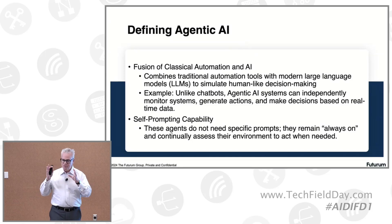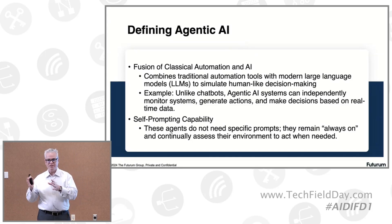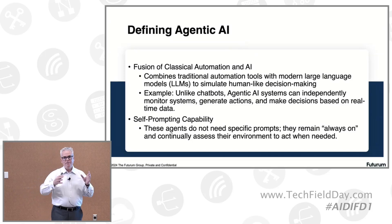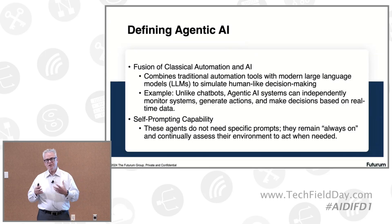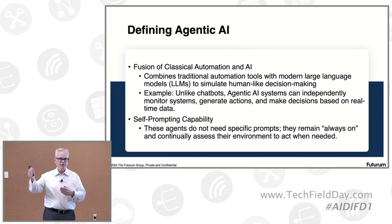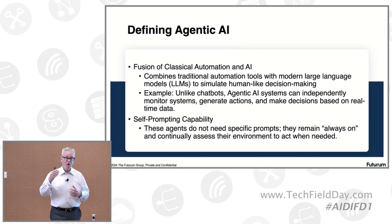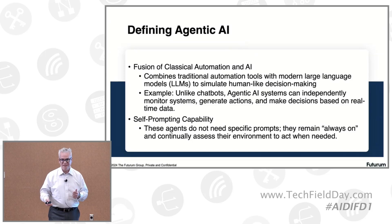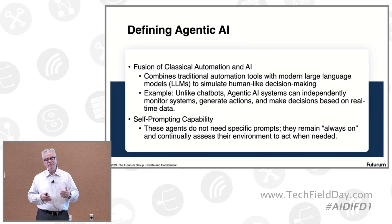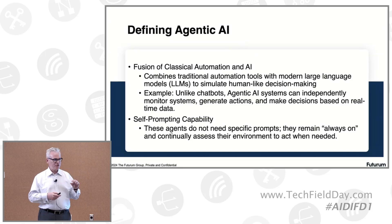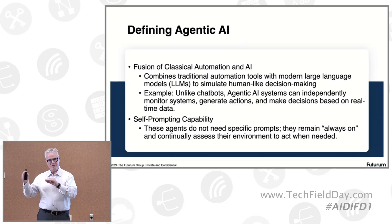You've got essentially classical automation systems, and then you've got AI. Those of us who have been working with process automation know that the hardest part about automating tasks is not building the automation. The hardest part is keeping that automation going as inputs change, as data formats change, as unexpected things happen, as systems break. If you've done a lot of automation, you've said, I wish there was something with even just a modicum of intelligence that could respond appropriately during the process flow.